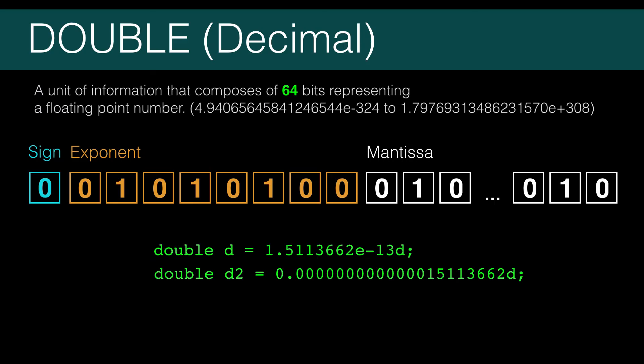A double is just a bigger float. It uses one bit for the sign, 11 bits for the exponent, and 53 bits for the mantissa. It gives you more precision and bigger values.